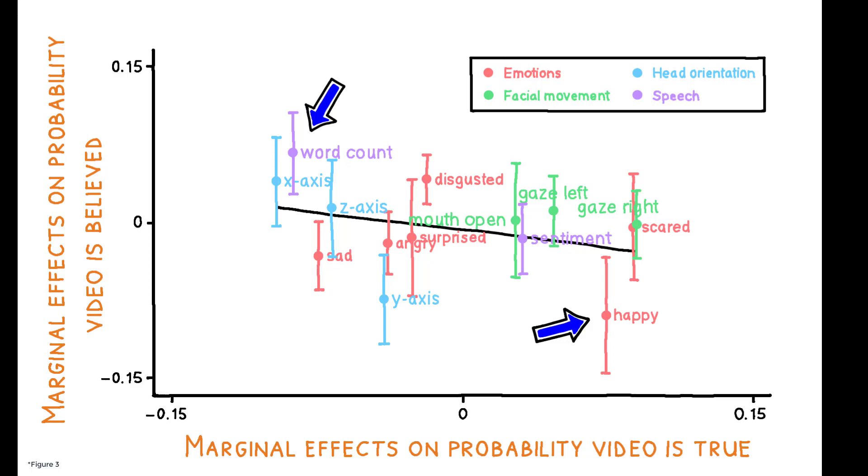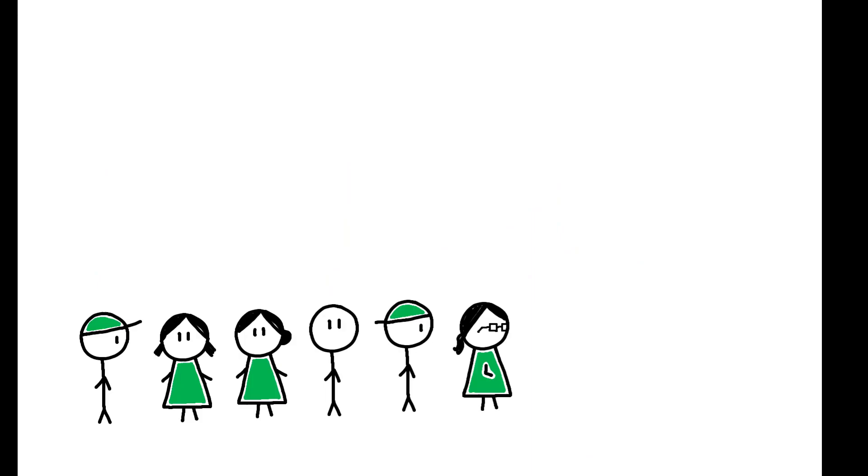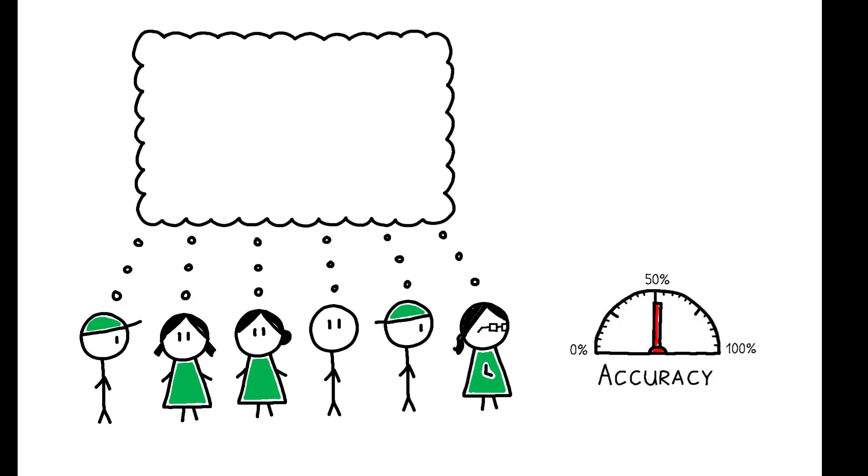This systematic misuse of cues helps explain a second key finding. Receivers believed they were better at detecting lies than they actually were. While actual accuracy was close to 50%, receivers believed their accuracy was around 65%.